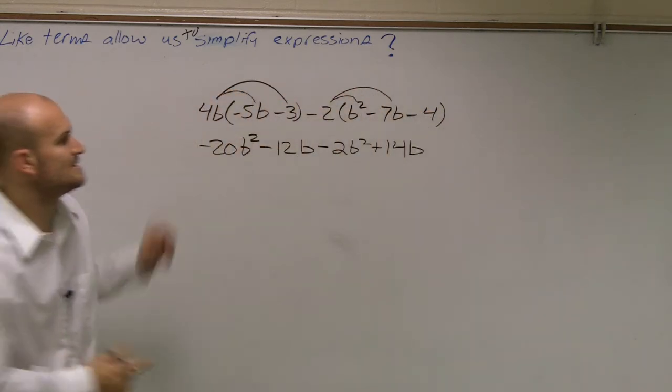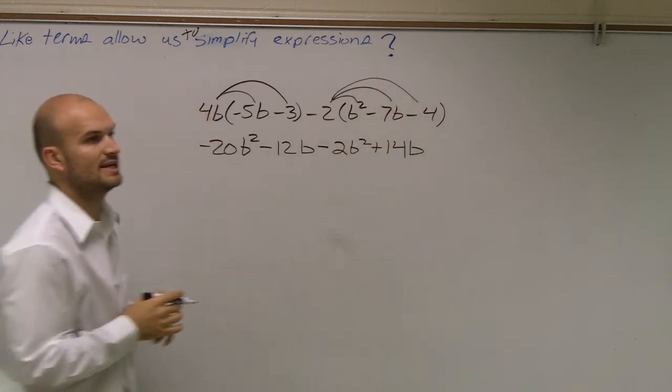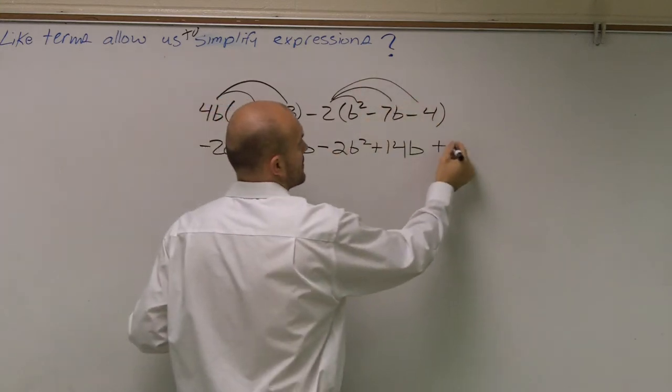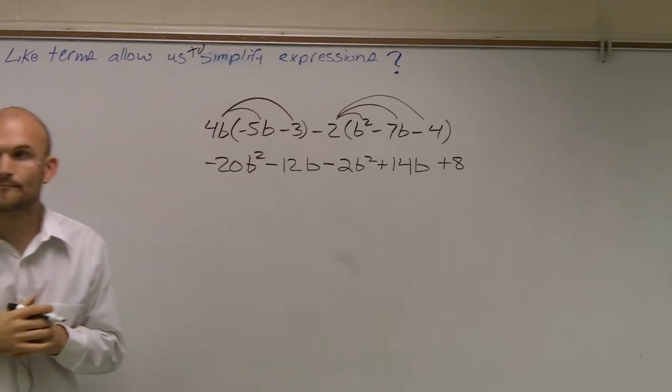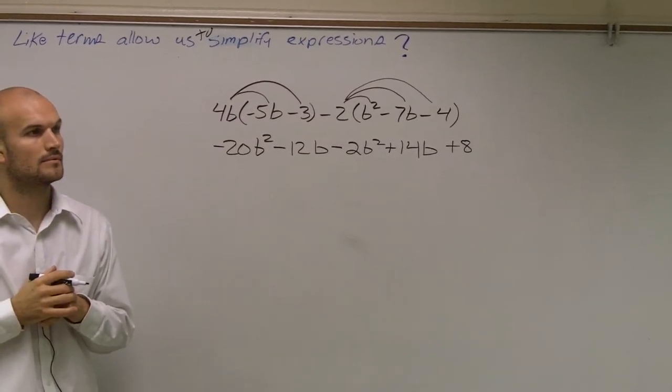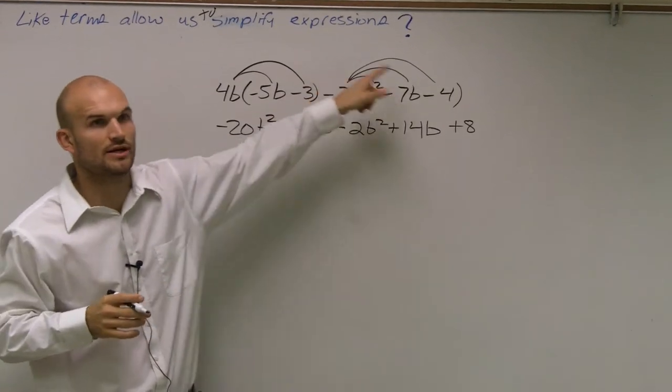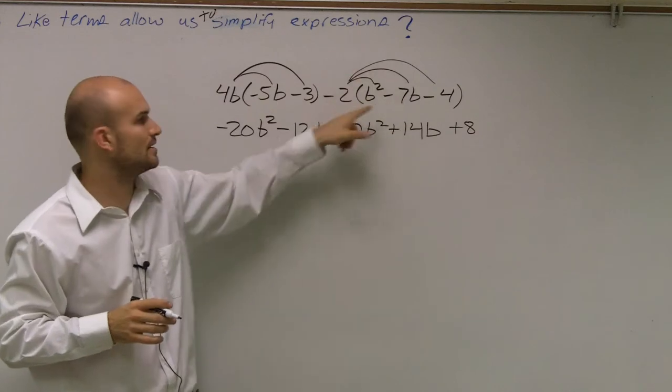Then the next one is negative 2 times negative 4, which is going to provide me with a positive 8. All I did was I multiplied the negative 2 times each one of these three terms. You can notice by there.